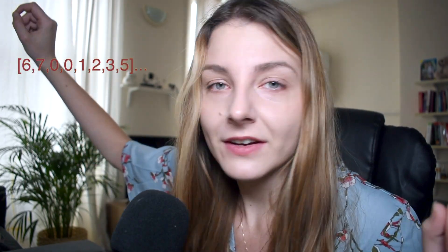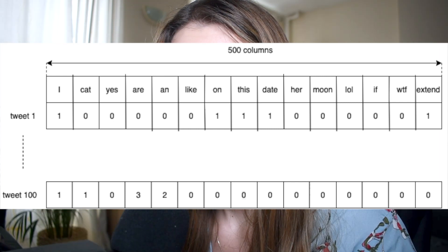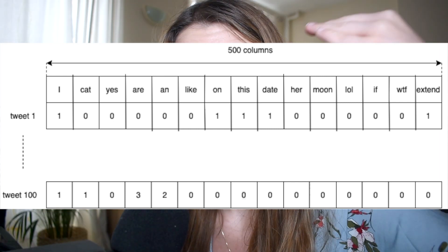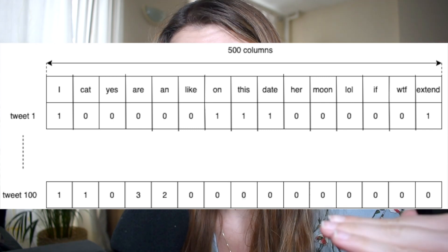What Bag of Words does is it turns each tweet into a number, or to be more precise, it turns it into a vector. A vector is just an array of numbers like 6, 7, 0, 0, 1, 2, 3, 5. For each tweet, this vector will have a length of 500 — that is the total number of words used in the entire sample of your tweets. Each column will represent a different word, and each row will represent one tweet.